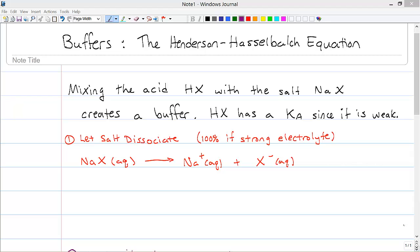The first thing we're going to imagine is that the salt, we're going to mix these two things together. So, we're going to first imagine the salt breaking apart into its ions. And that's because this is a 100% dissociation if we have a strong electrolyte. So, just let it happen.